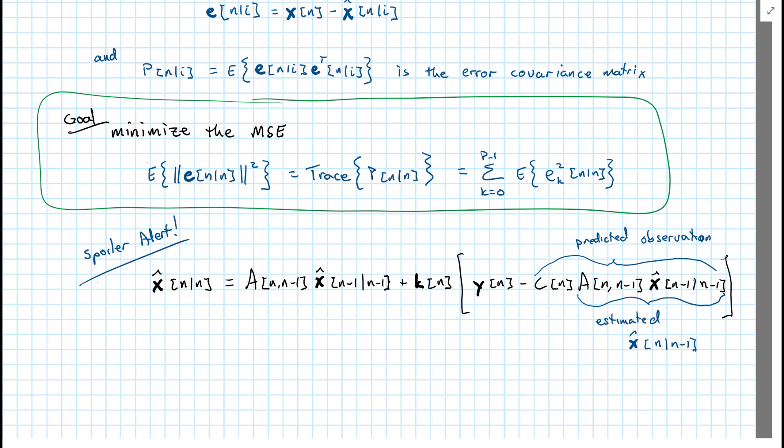And then what's in the brackets is the error based on the difference between our actual observation and our predicted observation. This updates our state estimate.